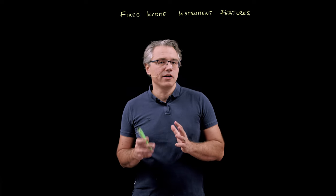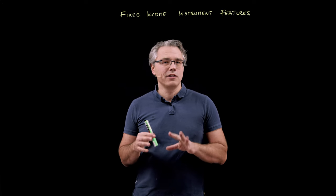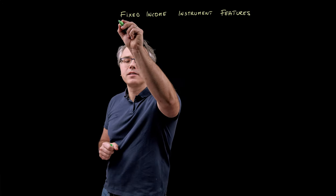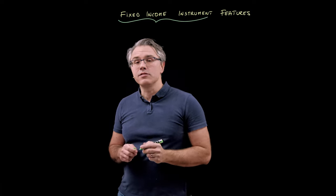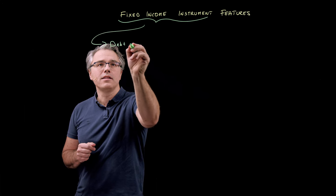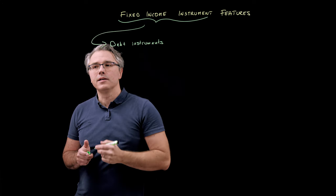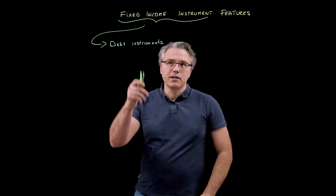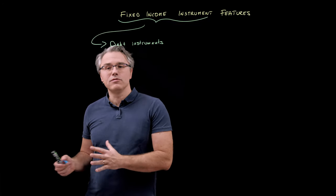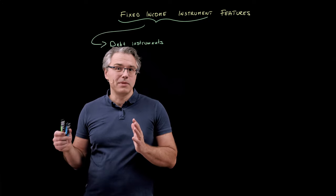I want to define a couple of things and give you a bit of extra info, which is in your curriculum and may easily be turned into a theoretical question. When we talk about fixed income instruments, we actually mean instruments of a debt nature — debt instruments. Inherent in this is a debt relationship. Fixed income is the conventional way of calling these types of instruments because they provide you typically with a contractual fixed level of income, although it may not always be fixed.